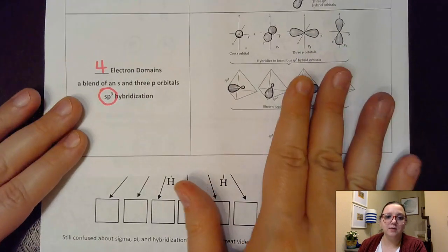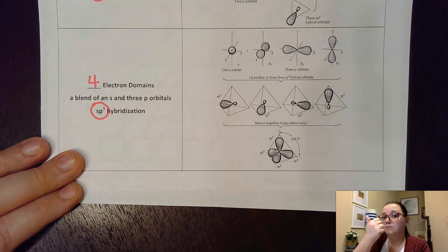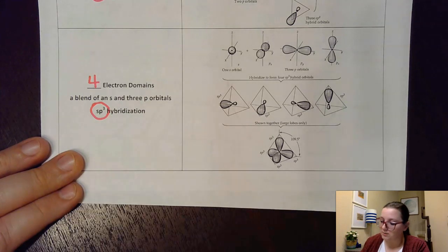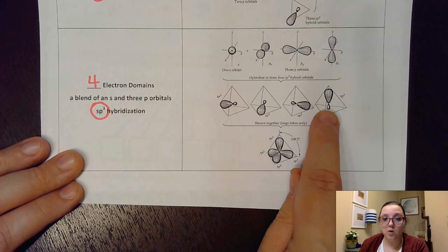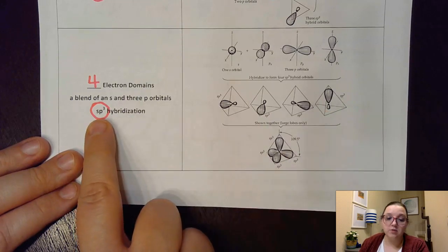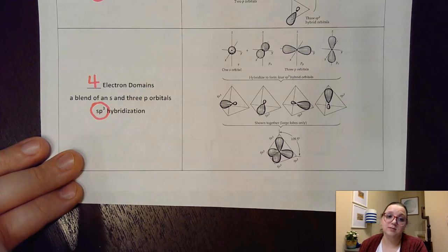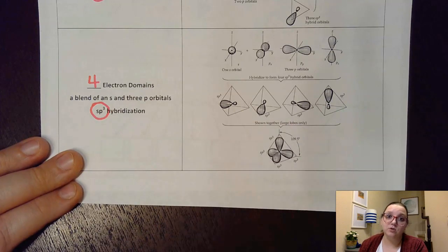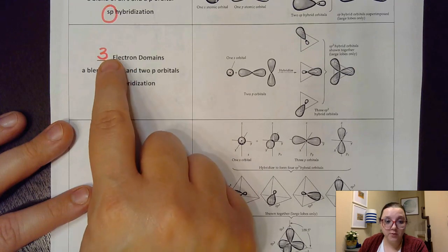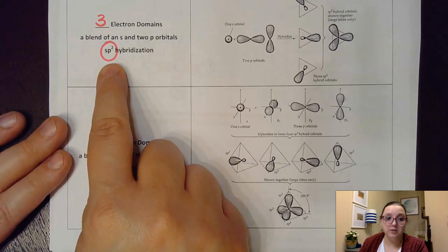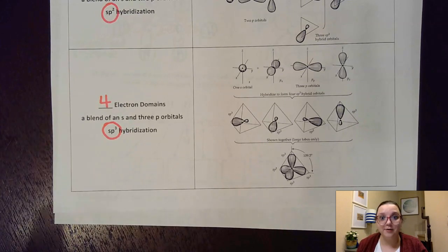So now let's talk about four electron domains. With four electron domains, I would need to blend together four total orbitals that all have equal energy. So that would be a blend of an S with three P's to get me to four orbitals. So I would blend together my S cloud with my three different hourglasses in three different directions, and that would get me these four hybridized orbitals. That would be called an SP3 hybridization. When I combine all those together, notice how we end up with that tetrahedral shape we're used to seeing with four electron domains, with that 109.5-degree angle.